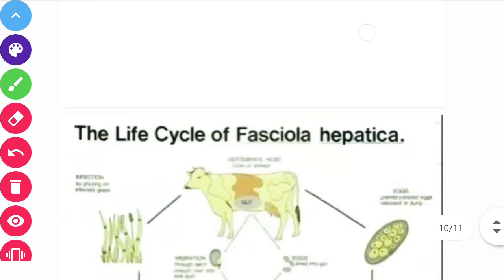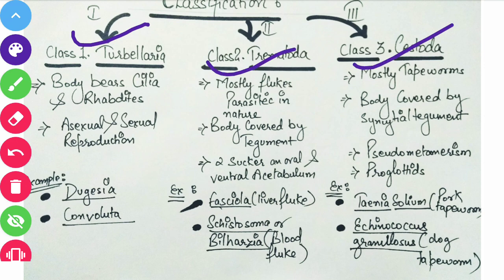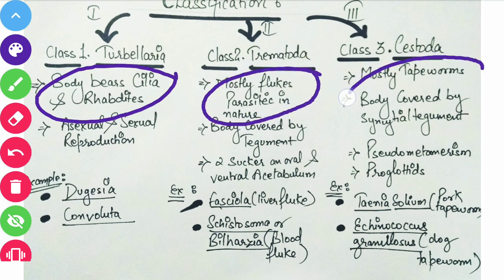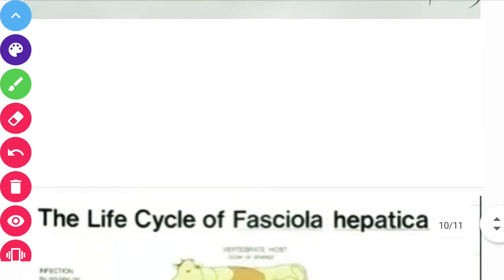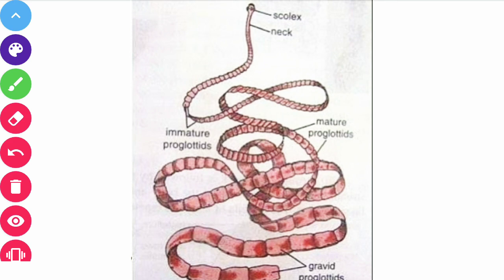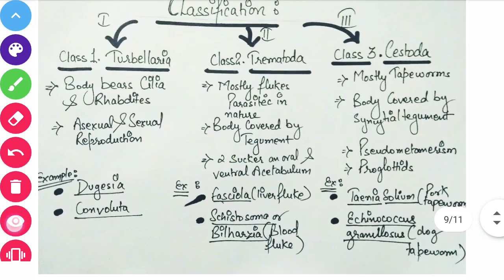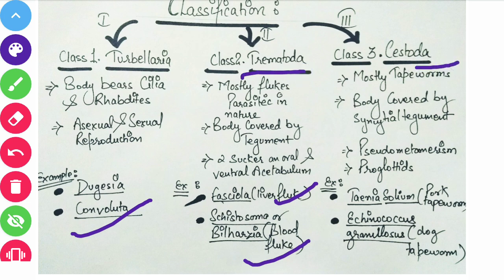Coming to classification: this phylum is divided into three classes — Turbellaria, Trematoda, and Cestoda. Turbellaria members bear cilia and rhabdites. All flukes are included in Trematoda, and all tapeworms are included in Cestoda. Tapeworms are so named because their body is flat and tape-like. Examples: Dugesia and Convoluta in Turbellaria; Fasciola and blood flukes in Trematoda; Taenia solium and Echinococcus granulosus in Cestoda.